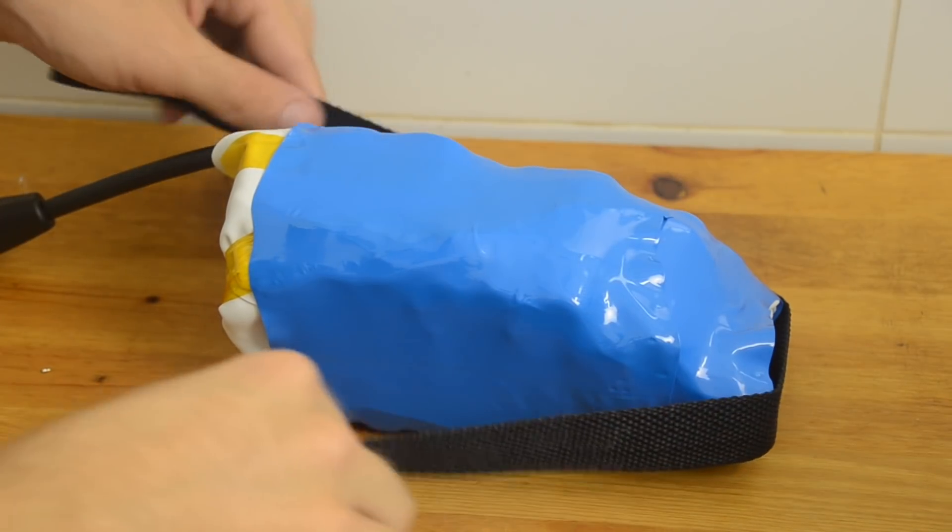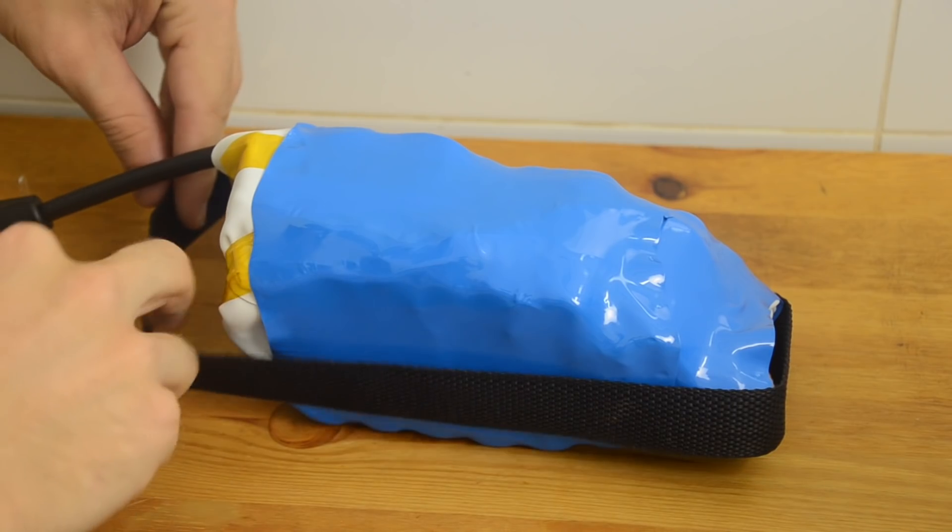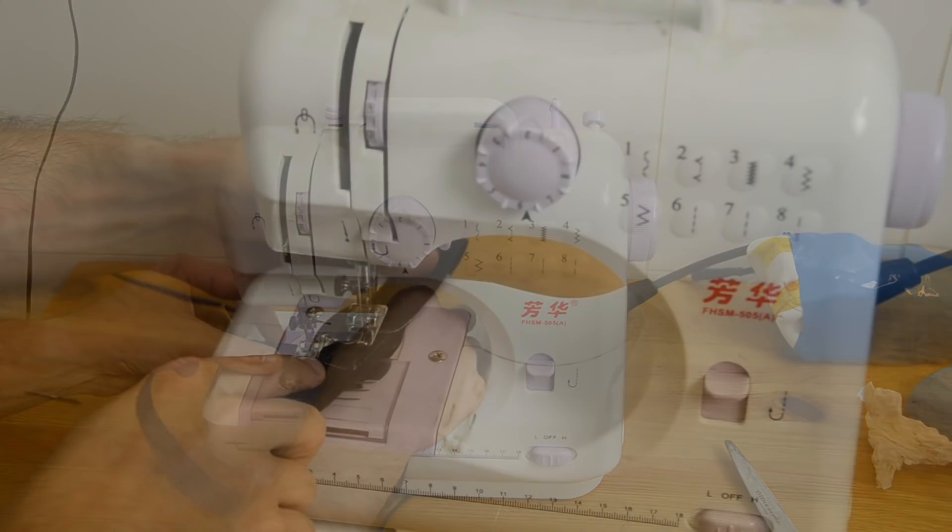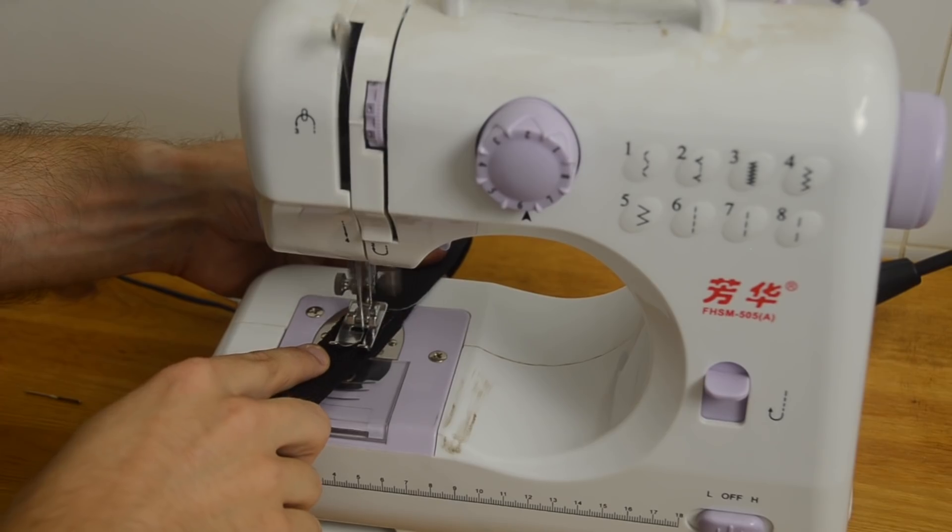At this point, I also want to include a little pole handle to make it easier for my wife to slide the battery out of the bag. So I'll measure out a piece of nylon webbing and then sew it into a loop.